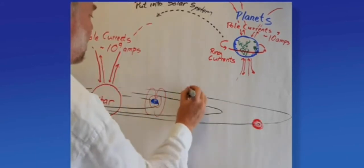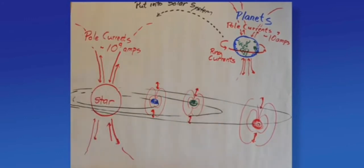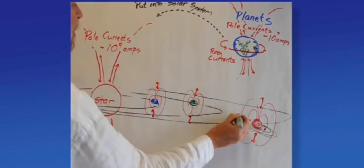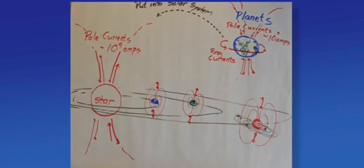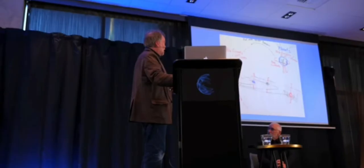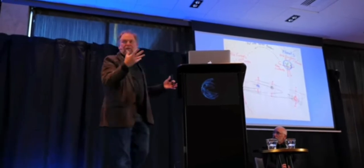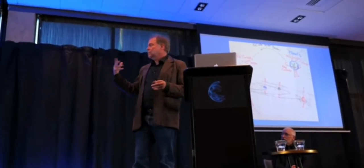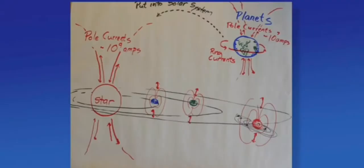Stars also have pole currents, ring currents. I'm drawing in some planets there. Planets all have their magnetic bodies. Electricity coming in and going out. This pattern starts to appear, if you draw it correctly. You start to see that there's some structure here that nature seems to be repeating.